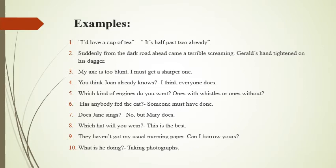Sentence two: 'Suddenly from the dark road ahead came a terrible screaming. Gerald's hand tightened on his dagger.' Here again there is coherence — there is no linking word but there is a logical connection: if it is dark and there is screaming, there is something terrible going on or some kind of danger, and that's why he tightened his grip on the dagger.